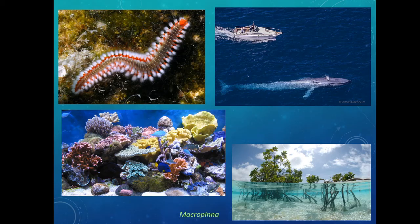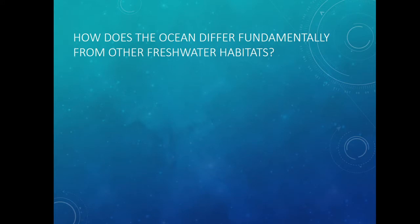When we first think about all the different organisms that we see in the ocean, we should think about what's causing that. Why do we see lots of little super colorful stuff and really huge organisms like the blue whale? And I think the way to get at that is to first think about the physical system itself — how does the ocean differ fundamentally from other freshwater habitats?